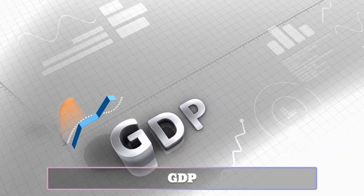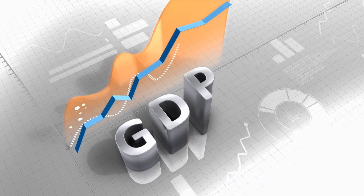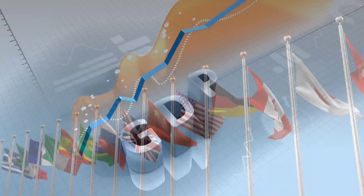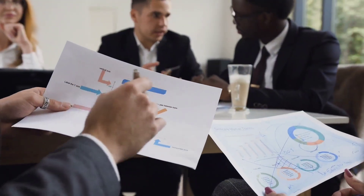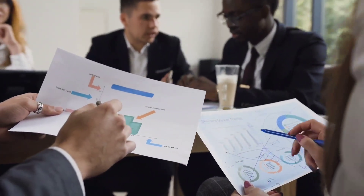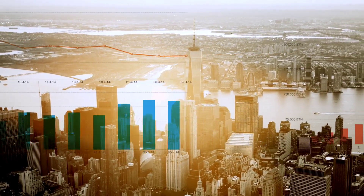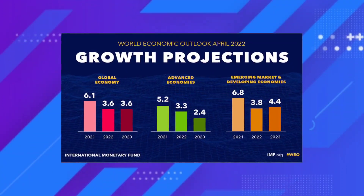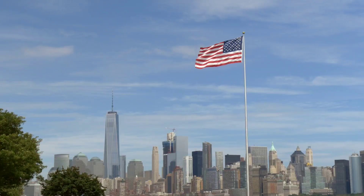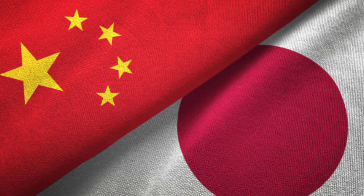GDP is an economic indicator that estimates the monetary value of goods and services generated within the boundary of a country during a specific time period. The GDP is computed in quarters or years as given by a country's economic authorities. If the output changes over time, it indicates the economic health of a certain country. According to the International Monetary Fund's calculation for 2022, the United States is the world's largest economy, followed by China and Japan. The Bureau of Economic Analysis publishes GDP figures in the United States quarterly.